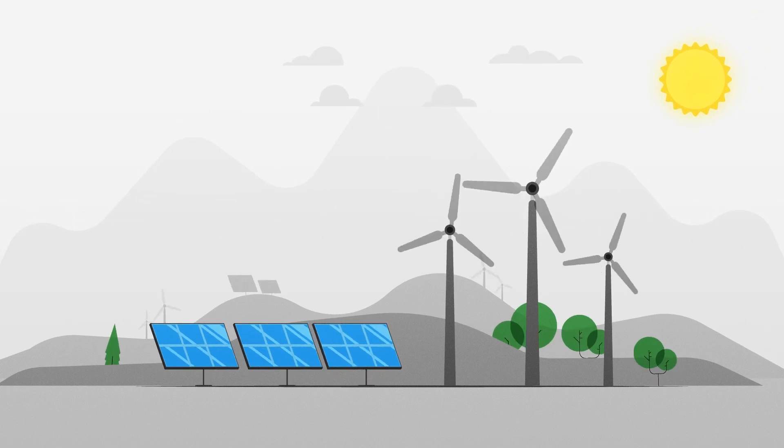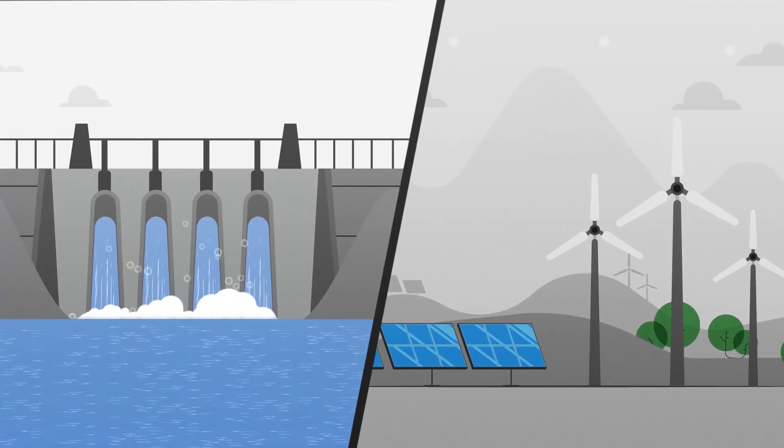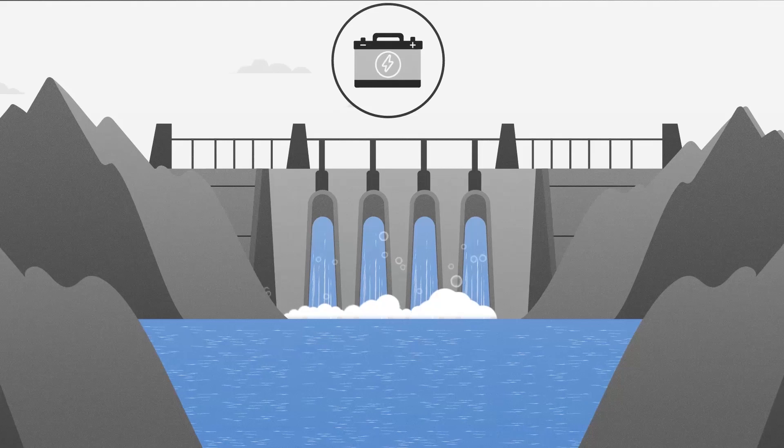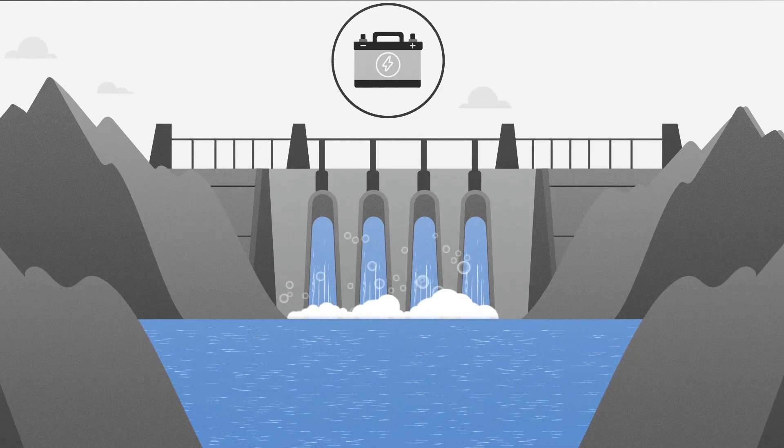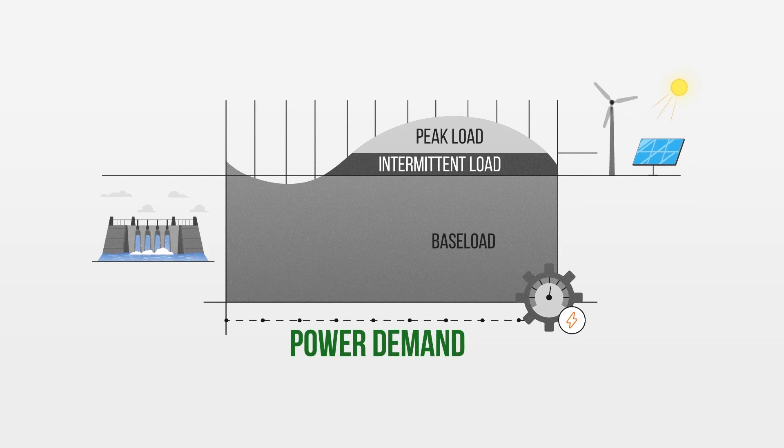While other renewable energy sources, like wind and solar, struggle with intermittency, impoundment dams do not. As reservoirs can store water for long periods of time, they essentially act like a giant battery which provides stable baseload power. This can be used as a foundation which supports intermittent renewable sources like solar and wind.